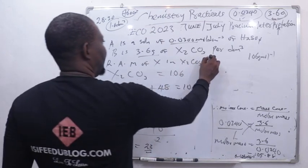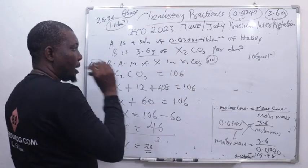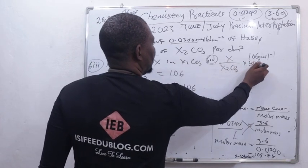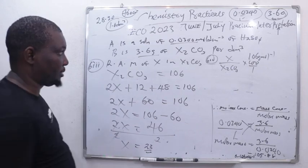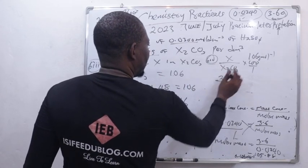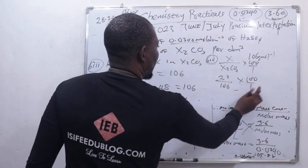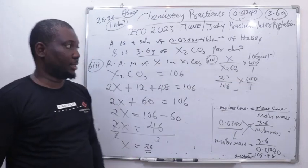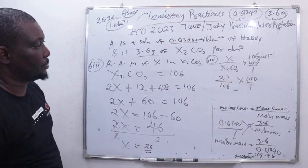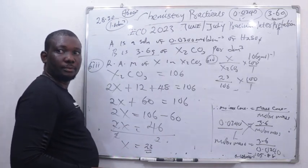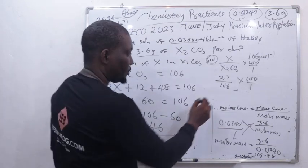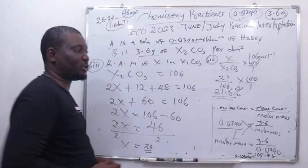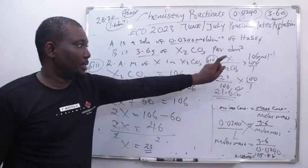Finally, part B(iv): find the percentage of X in X₂CO₃. Now that we know X is 23, percentage equals (23 over 106) times 100. That gives 0.2166 times 100, which equals 21.66%. That is the actual percentage of X in X₂CO₃.